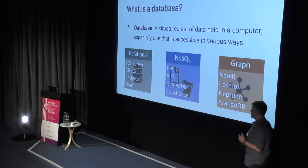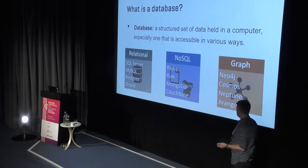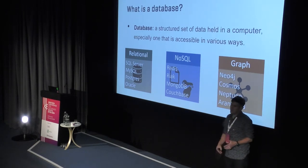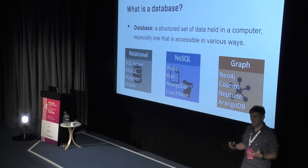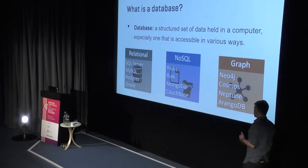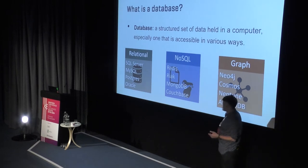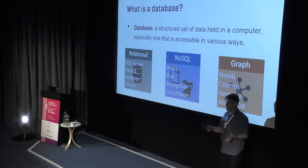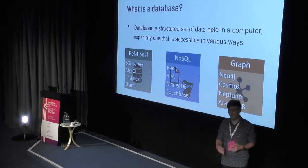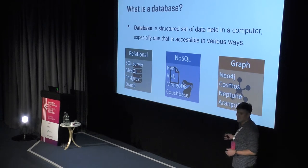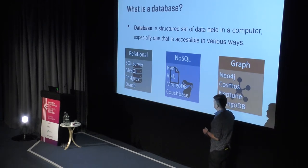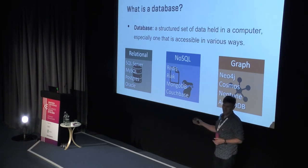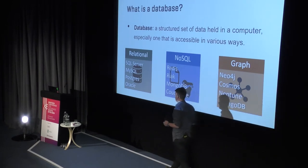In the graph database category we've got Neo4j, Cosmos, Neptune, ArangoDB — used for a lot of connected data work. Full disclosure: pretty much all my work and most of this presentation is around Neo4j because it's what I use and what I know best.